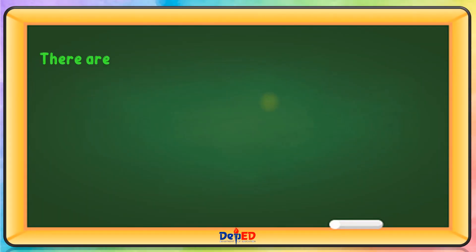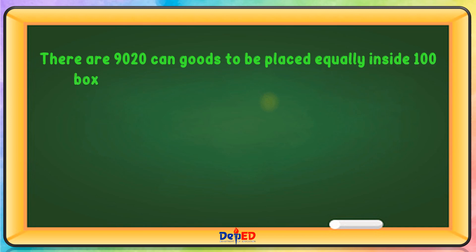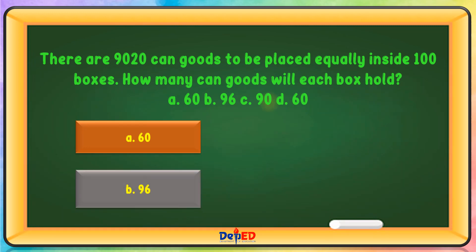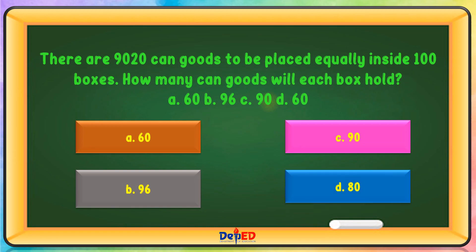There are 9,020 canned goods to be placed equally inside 100 boxes. How many canned goods will each box hold? A. 60, B. 96, C. 90, or D. 80. The correct answer is C.